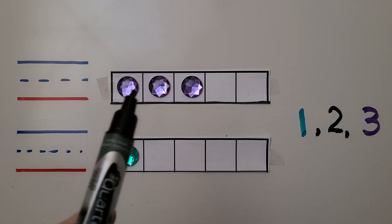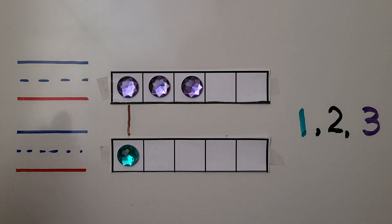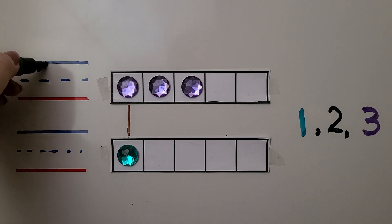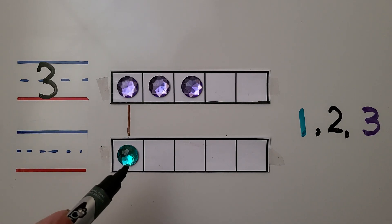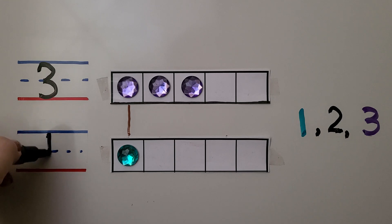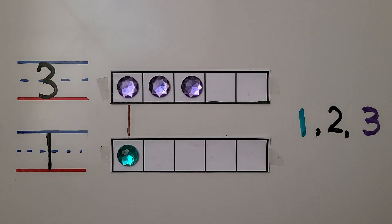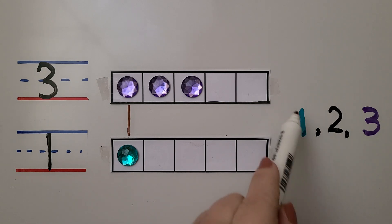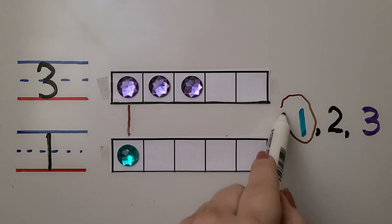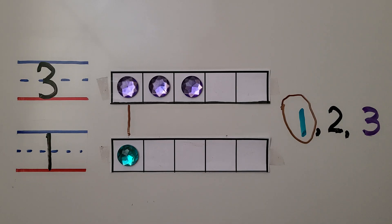We can count them: one, two, three. We can write the number three. This five frame has one. One counter is fewer than three counters. The lesser number comes before the greater number in counting order. One comes before three. When we count, we say one, two, three, and one comes before the three. It's the lesser number.